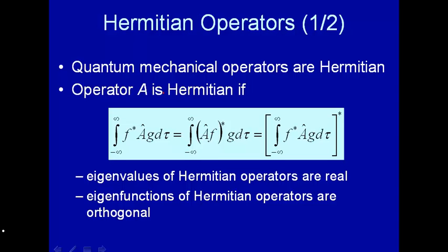Well, these quantum mechanical operators are a special kind of operator. They're called Hermitian operators. Let's first define a Hermitian operator, A.